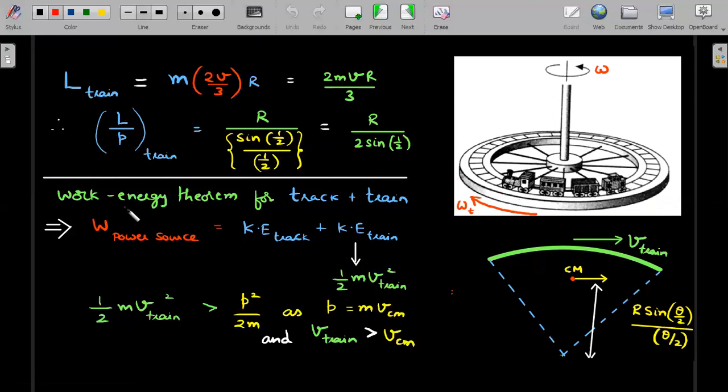Work energy theorem for the track plus train, if you use work done by all forces. Actually, there's no external force. So only work should be done by internal force, which is nothing but the battery that runs the train. So work done by power source should be equal to the change, actually change in kinetic energy. But since the initial kinetic energy is zero, you could call it as KE of track plus KE of train developed together. The final ones, and KE of train in this particular thing, you should be able to write it as half M into V of each part of the train square. That is okay. But you can't write this as P square by 2M. The reason is the P value is MVCM. And this is not equal to half MVCM square. The reason is very simple.